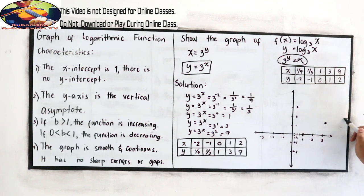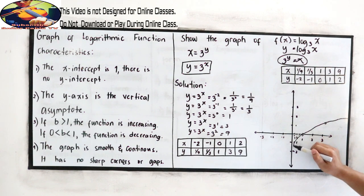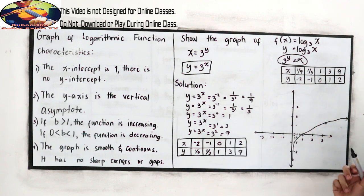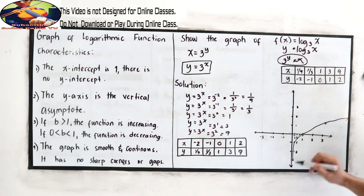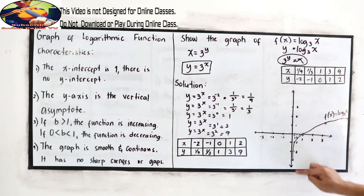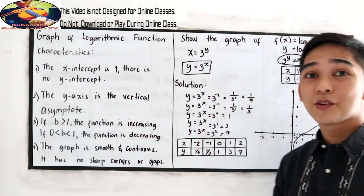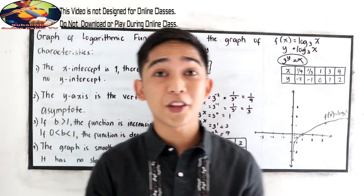Connect our points. This will be our graph. So it will go closer and closer to our y-axis but they will never touch each other. Because our vertical line is our vertical asymptote. This will be the graph of f(x) is equal to log x base 3.